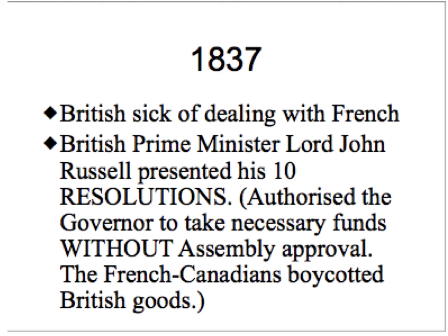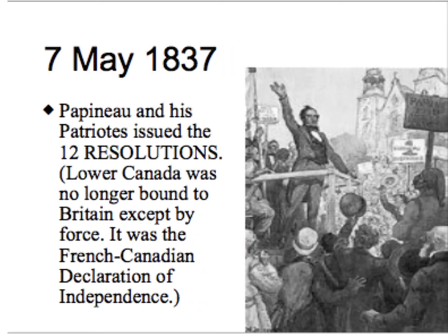which authorized the government to take necessary funds without the Assembly's approval. That marked the beginning of the Rebellion in Lower Canada, because on the 7th of May, 1837, Louis-Joseph Papineau and his Patriots issued their twelve resolutions — in effect, the French version of the American Declaration of Independence — stating that Lower Canada was no longer bound to Britain except by force.